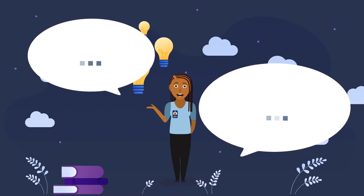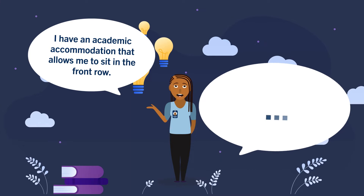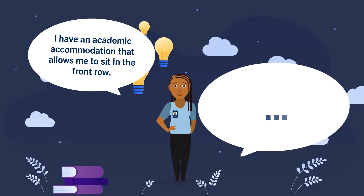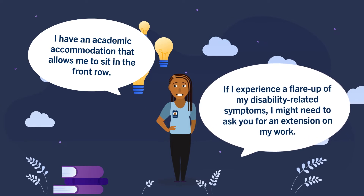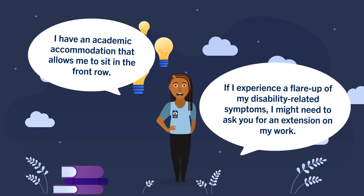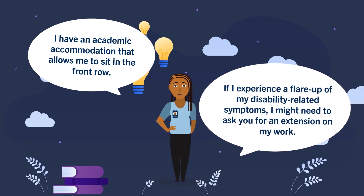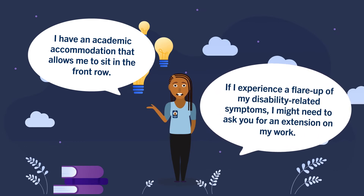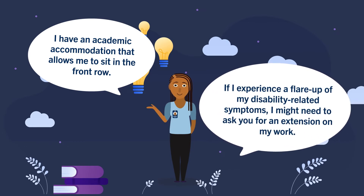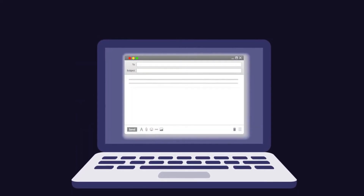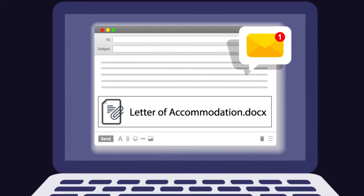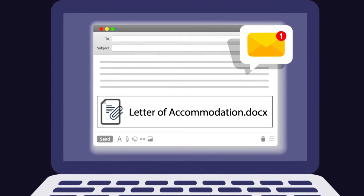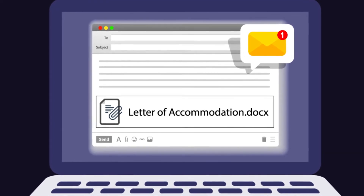You might say something like, 'I have an academic accommodation that allows me to sit in the front row.' Or, 'if I experience a flare-up of my disability-related symptoms, I might need to ask you for an extension on my work.' If you ask your instructor in person, follow up with an email outlining what you discussed, and remember to attach your letter of accommodation, even if you've already shared it.